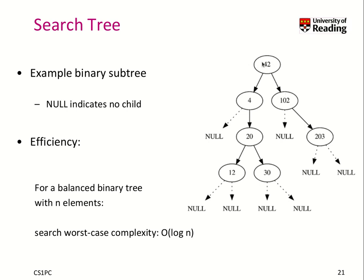By looking and comparing one time, we make a choice as to which of the children to reiterate this process. And if you do this right, you can make a search tree in such a way that it's a balanced binary tree — then you get a worst-case complexity of O(log n) for the search, which is similar to binary search.